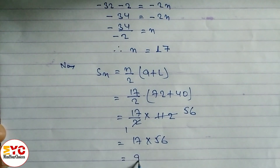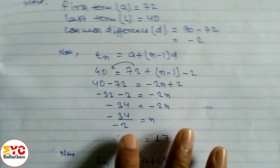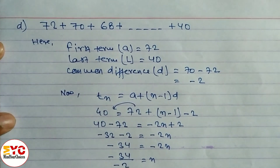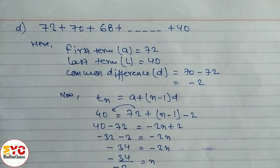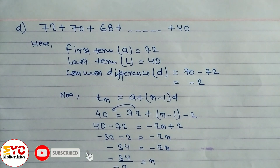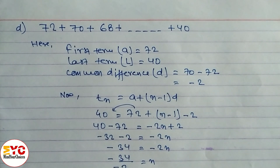So 952 is the answer for question 2D. In this second part, I have solved question number 2A, B, C, and D. If you understand, please hit the like button and consider subscribing. Don't forget to hit the bell button for notifications of upcoming videos. In the next part, I will solve questions 3 and 4. Thank you.